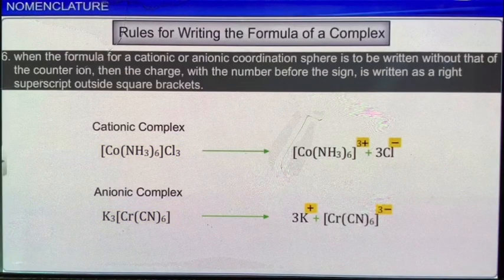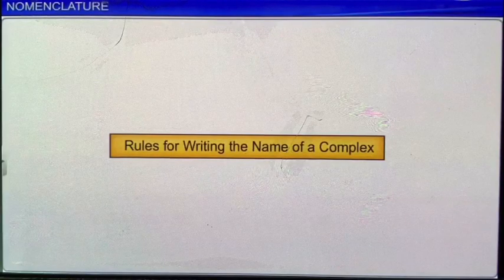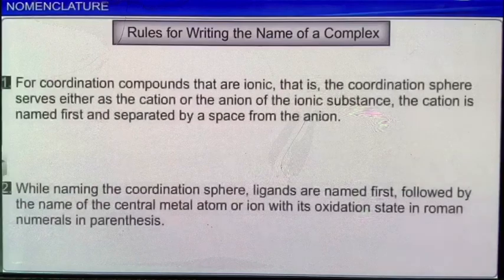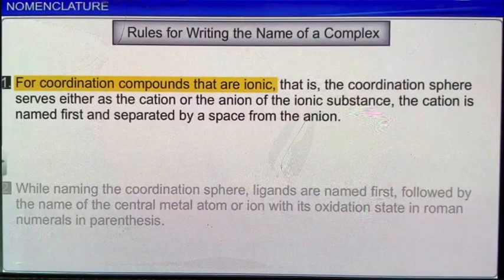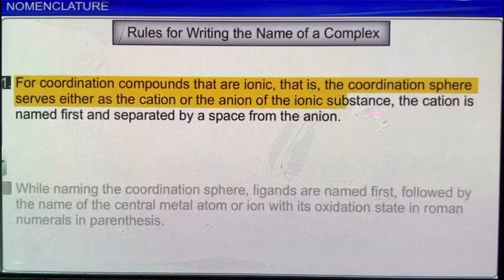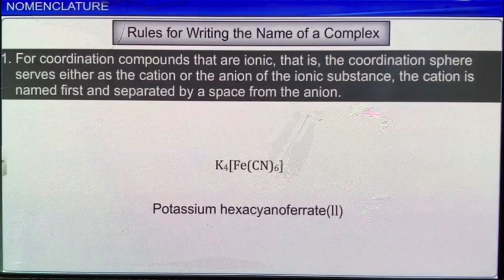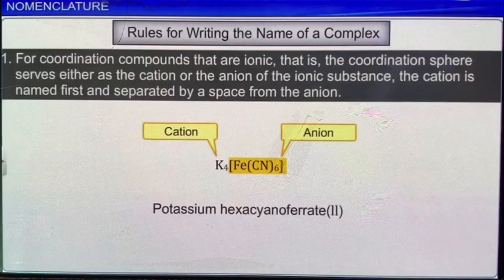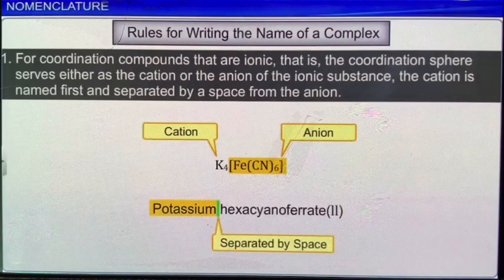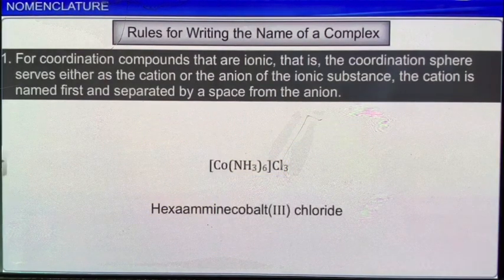Now let's see the IUPAC recommendations for writing the names of complexes. The first rule is that for coordination compounds that are ionic — where the coordination sphere serves either as the cation or the anion — the cation is named first and separated by a space from the anion. For example, in the complex K₄[Fe(CN)₆], where the coordination sphere is an anion, the cation potassium is named first and separated by a space from the name of the anion. On the other hand, in a complex such as [Co(NH₃)₆]Cl₃, where the coordination sphere is a cation, the cationic coordination sphere is named first, followed by the name of the counter anion, chloride.